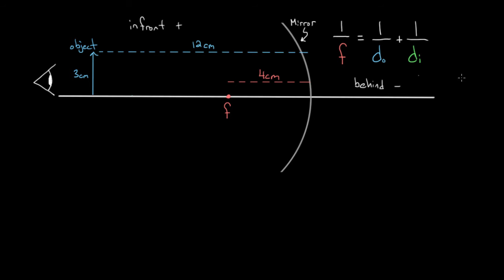I've got some numbers in here already, so let's solve this one using the mirror equation. We say one over the focal length — and already we have to decide on a sign. This mirror, based on how we're looking at it, is a concave mirror. With the sign conventions we just discussed, concave mirrors always have a positive focal length. Since this focal point is four centimeters from the center of the mirror, we plug in the focal length as positive four centimeters. Note: I'm not converting units — if you leave everything in centimeters, you'll get an answer in centimeters, so that's fine as long as all units match.